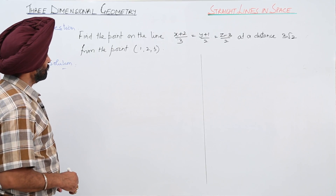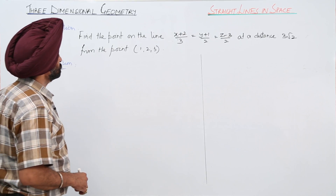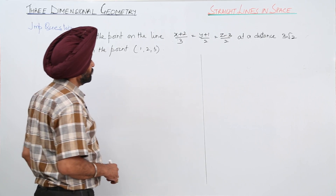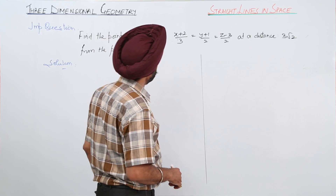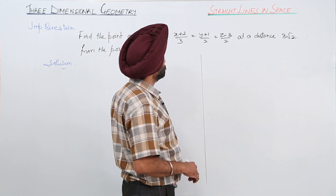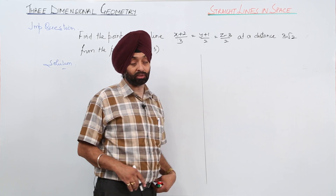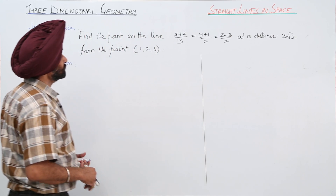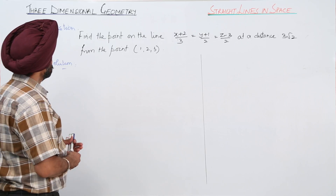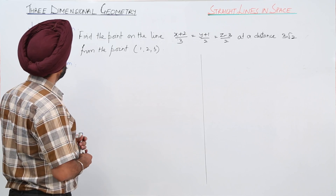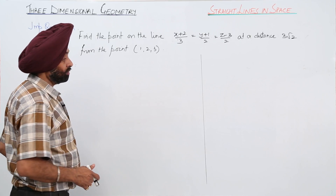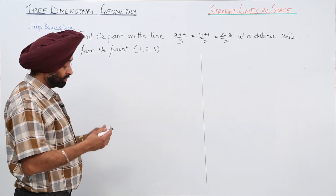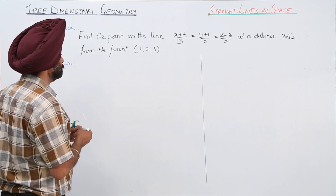Find the point on the line (x + 2)/3 = (y + 1)/2 = (z - 3)/2 at a distance 3√2 from the point (1, 2, 3).